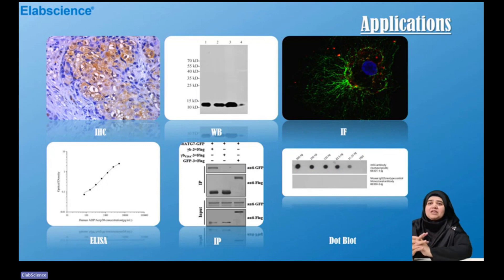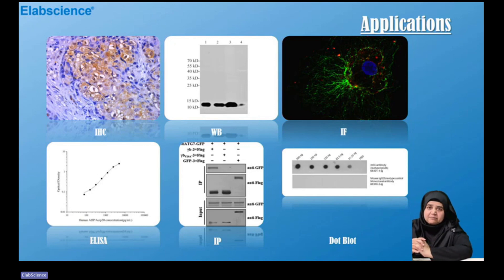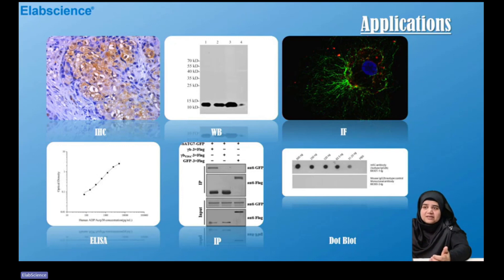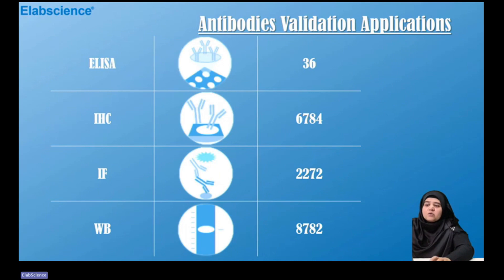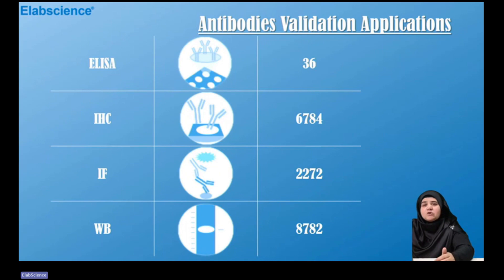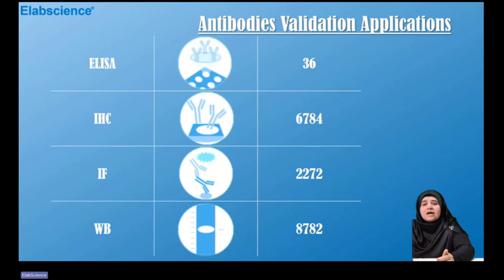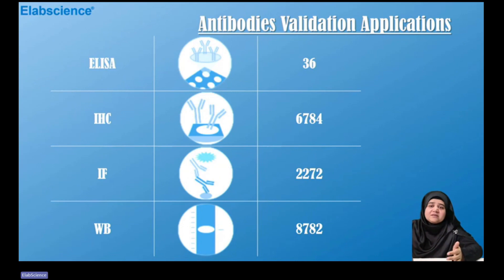Here are some of the applications covered: IHC, WB, IF, ELISA, IP, and dot blot. For antibody validation: almost 36,000 antibodies have been validated by ELISA, more than 67,000 by IHC, more than 2,000 by IF, and about 87,000 antibodies provide western blot validation.